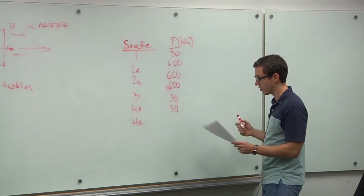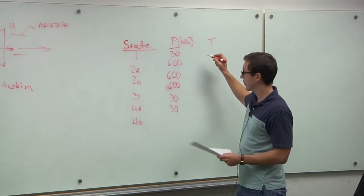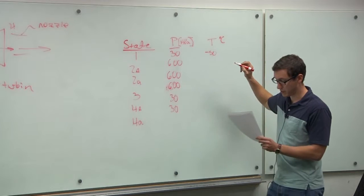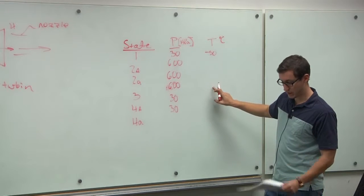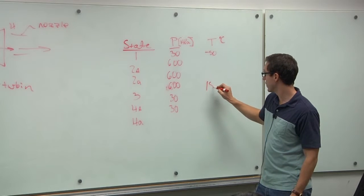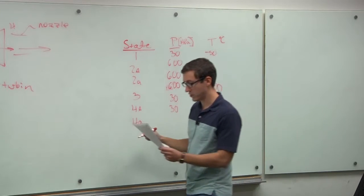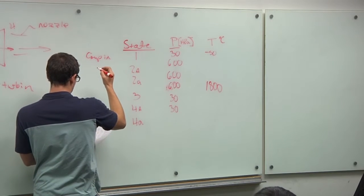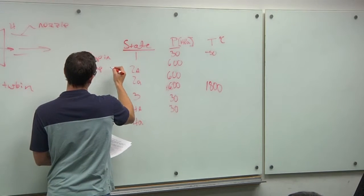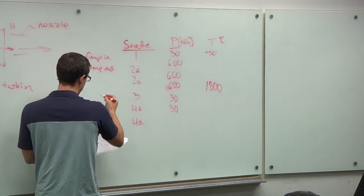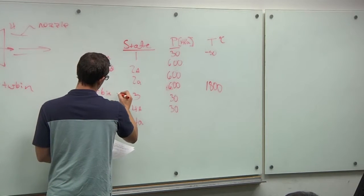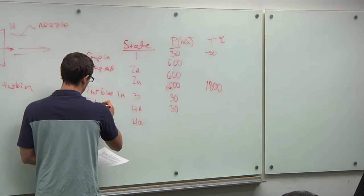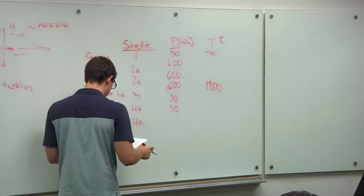He says the first step is to make a table of our states. We've got state 1, 2S, 2A, 3, 4S, and 4A. We have our pressures, all of which are already given to us. We're operating between 30 and 600 kPa, because our pressure ratio is 20. So, we started at 30 kPa, and then it said we had a compression ratio of 20, so that's how we know that our other pressure is 600 kPa. How do we find our temperature? We know that we're starting at minus 50 degrees C, and that the temperature on the inlet of the turbine is 1800 degrees C. We can go ahead and label these parts, too. This is the compressor in, compressor out.